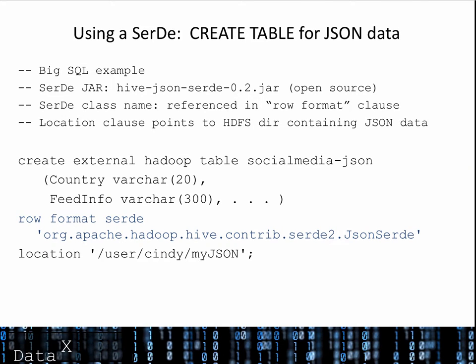So I created a SQL table for this JSON data. First, I located a publicly available JSON CERTES that I thought would satisfy my needs, and I made that jar file available to my SQL engine, which was IBM's BigSQL. Then I created an externally managed table that pointed to the HDFS directory containing my social media JSON data — you'll see that in the location clause at the bottom of this example. But what I really want you to focus on is the area in blue. The row format clause references the class in my CERTES jar file that BigSQL will use to serialize and deserialize the data.